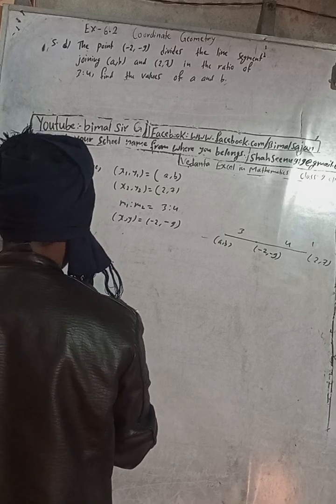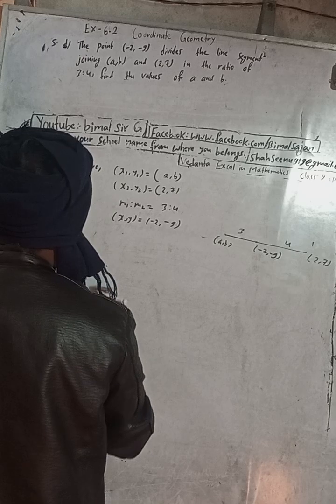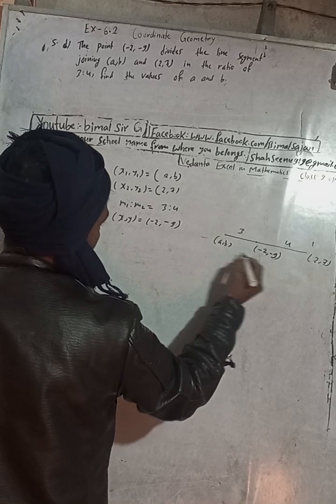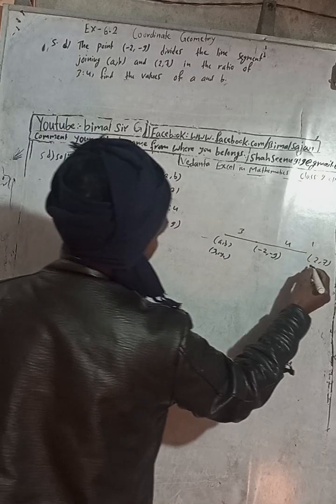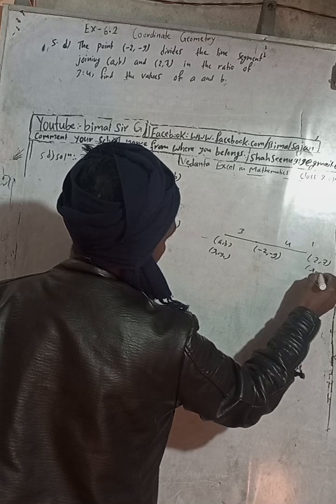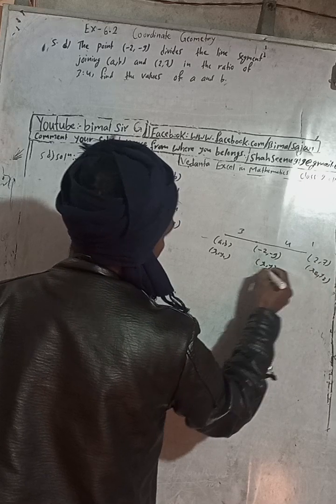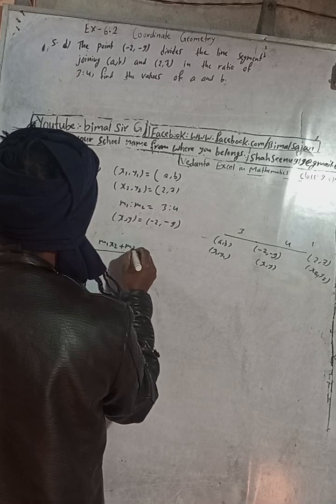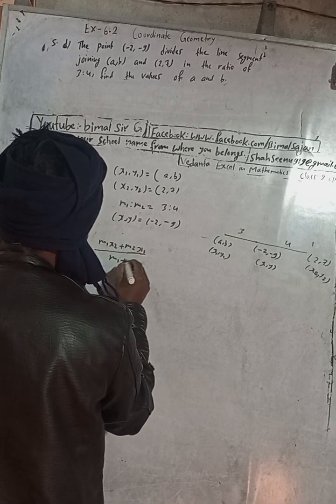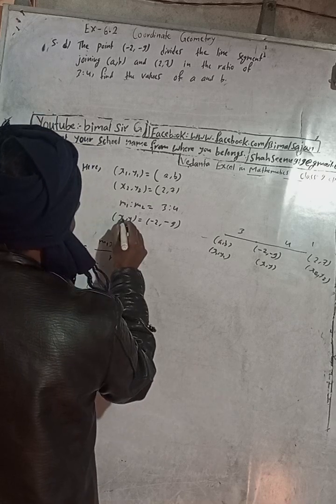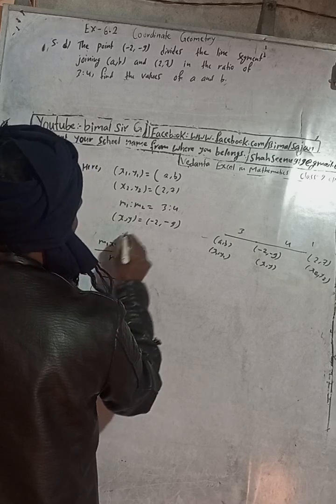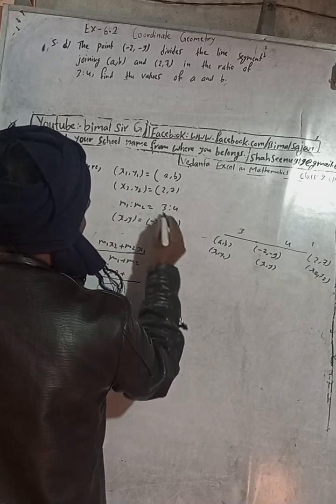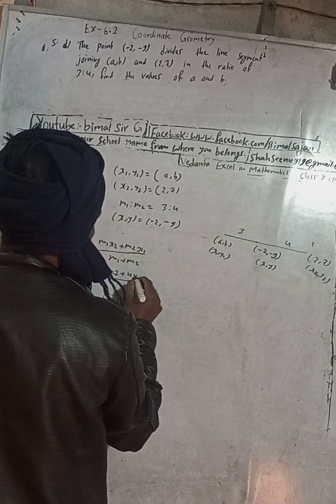According to this figure, now we have to solve this. Now by using the section formula, x is equal to m1×x2 plus m2×x1 divided by m1 plus m2. So this x means -2 is equal to m1 is 3 into x2, x2 is 2, plus m2 is 4 into x1, x1 is a.